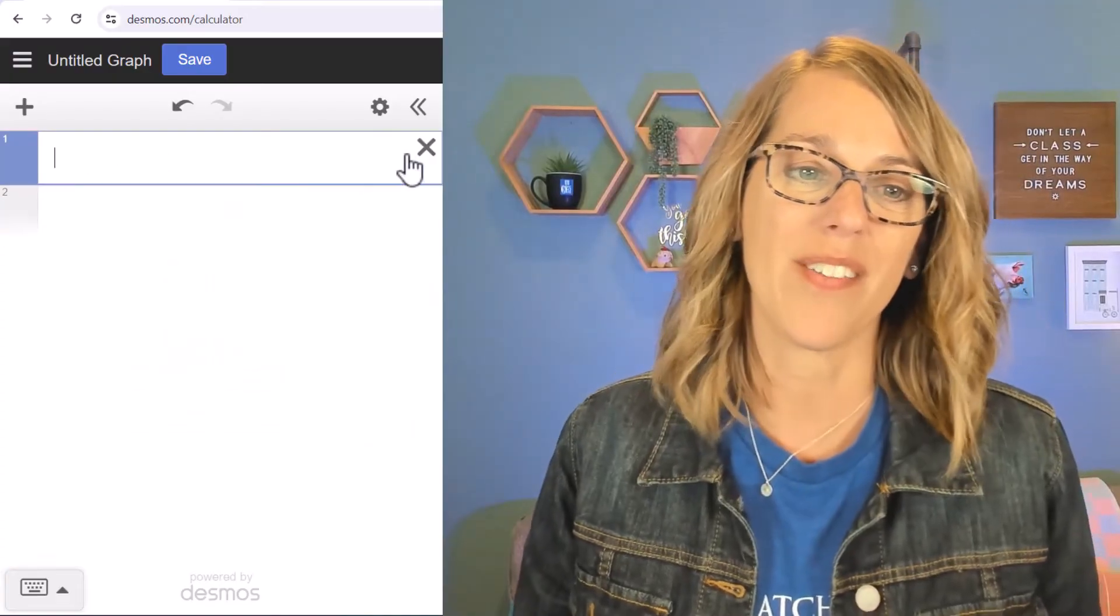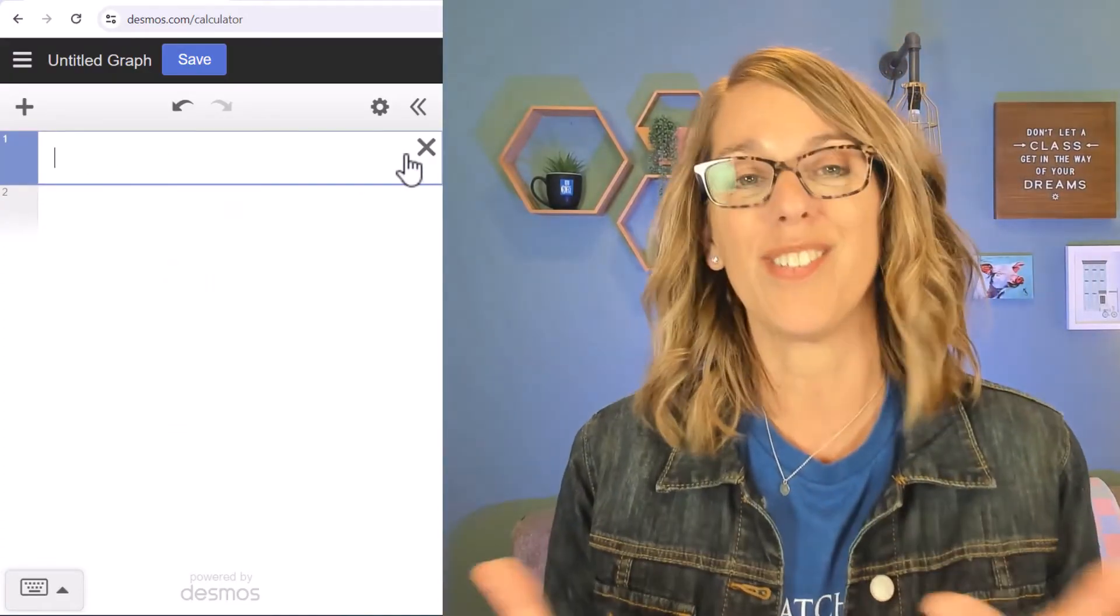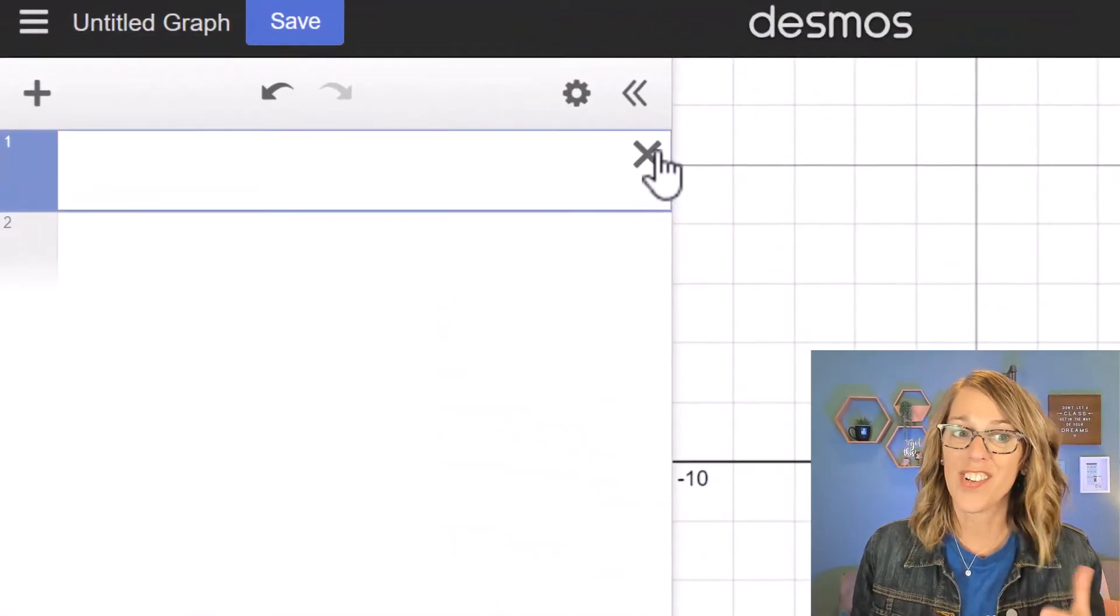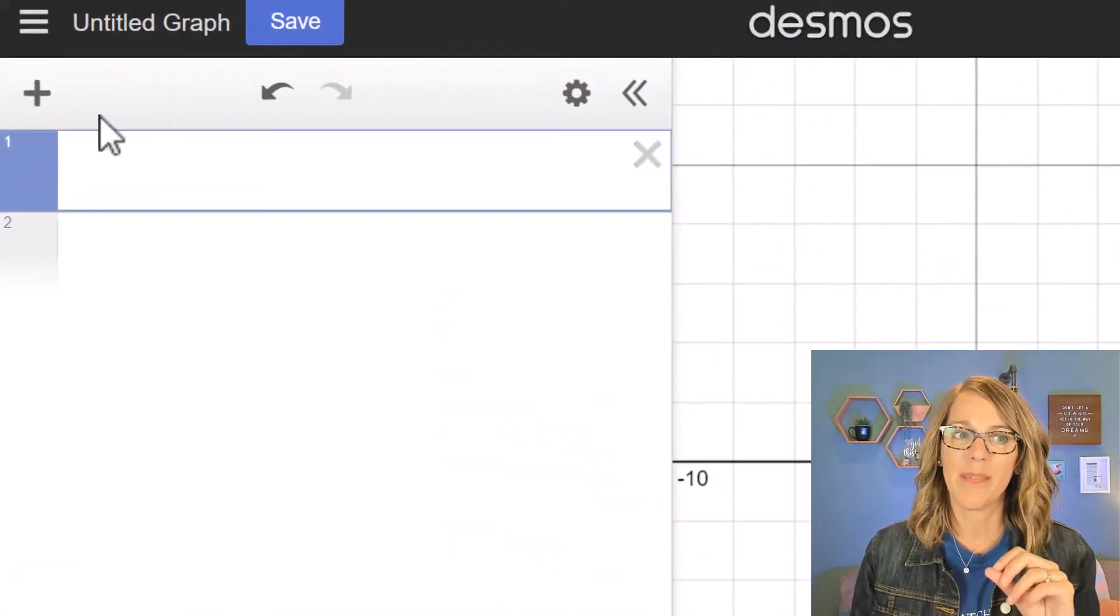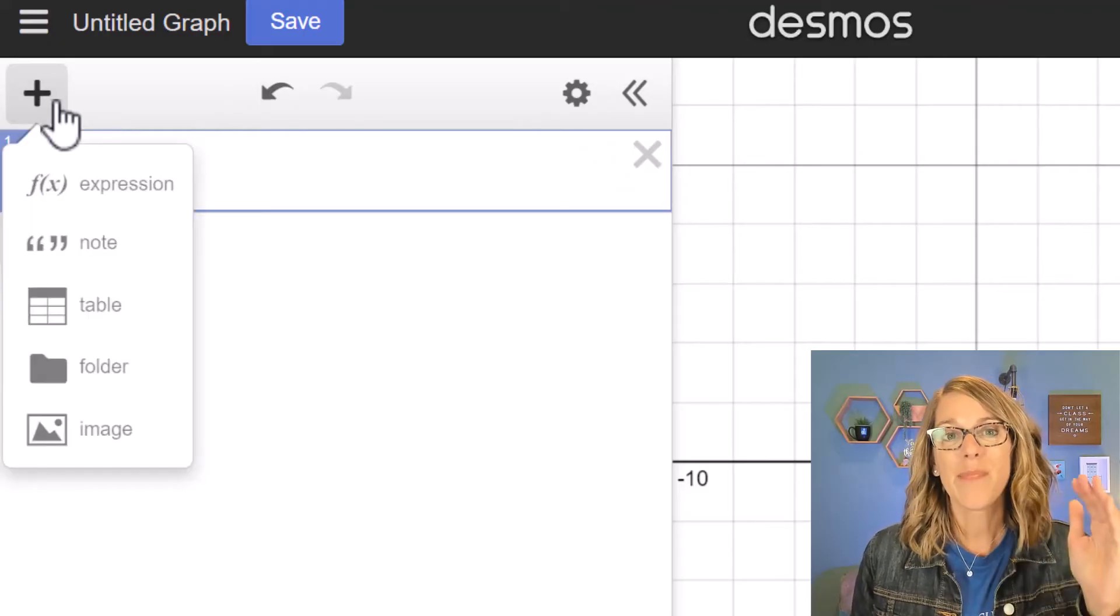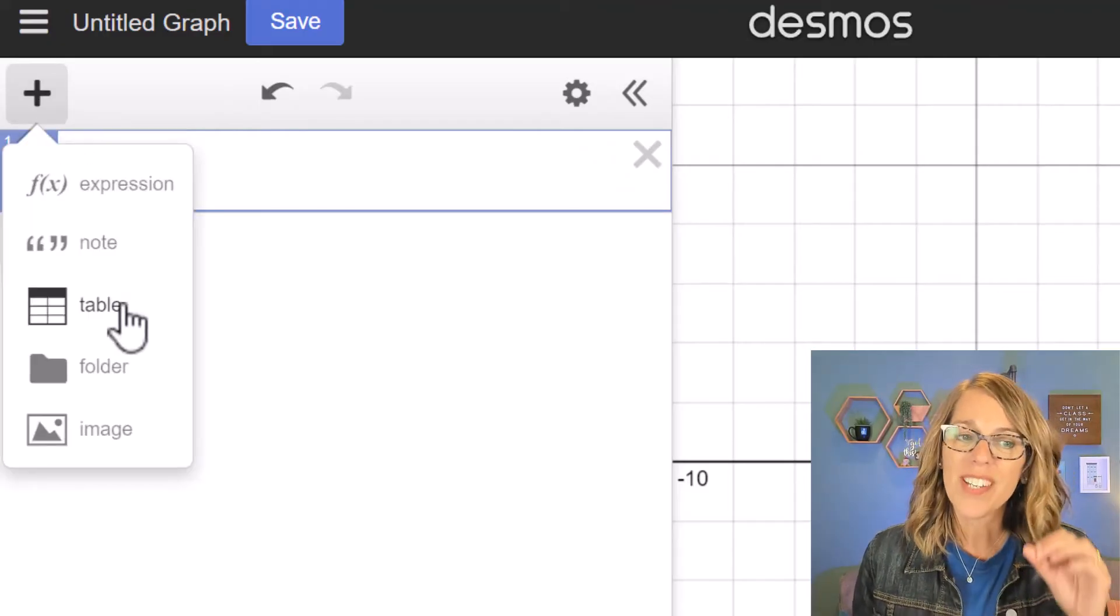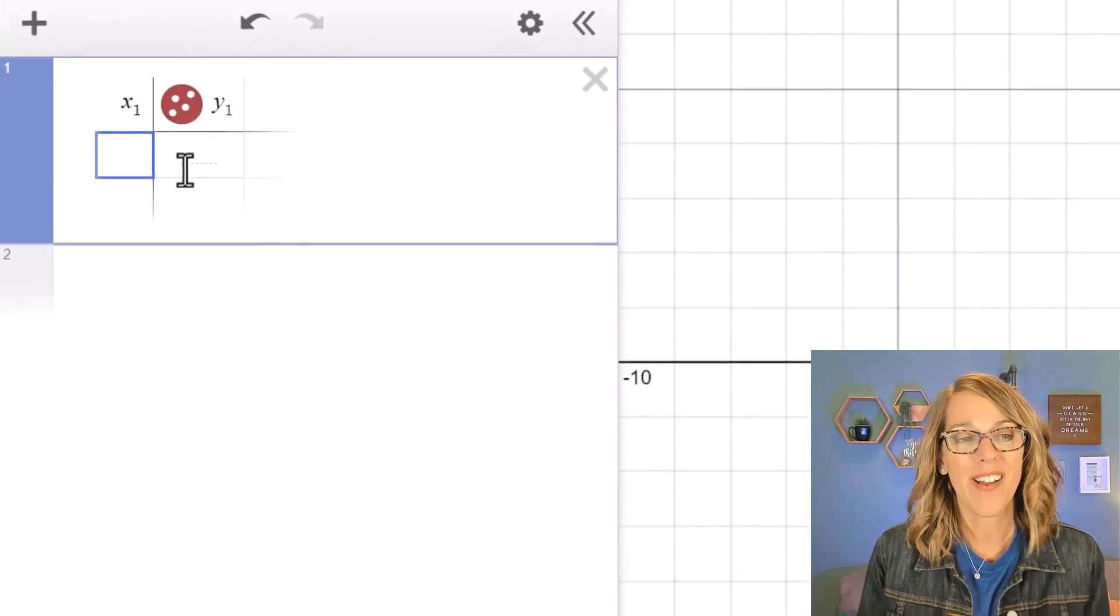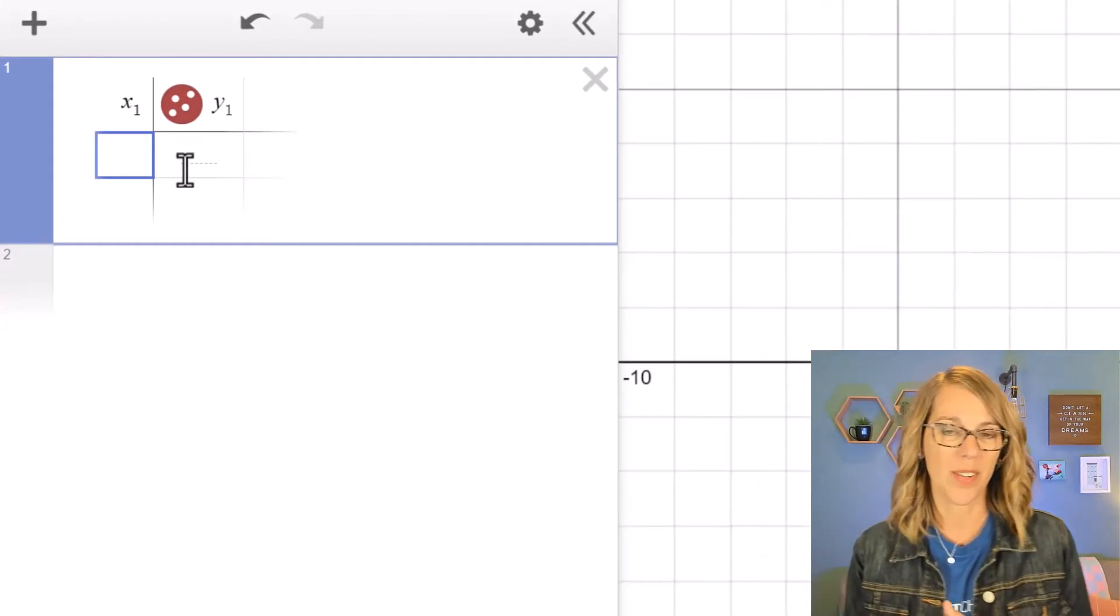I'm going to close out each of these because there are other ways that you can use tables in Desmos. Next let's create a table from scratch. I've got an empty cell and I'm going to click on that plus sign and the plus sign gives me several different options including that table. So it's automatically labeled my columns x sub one and y sub one.